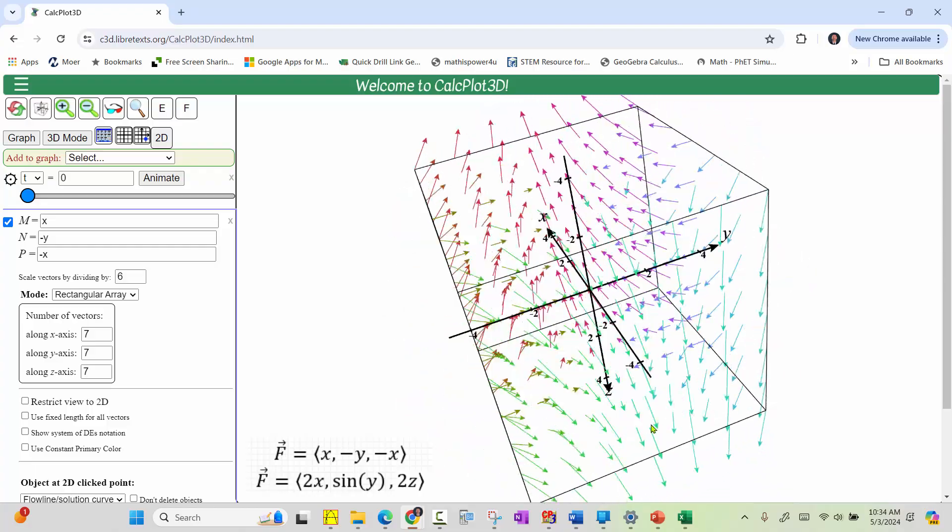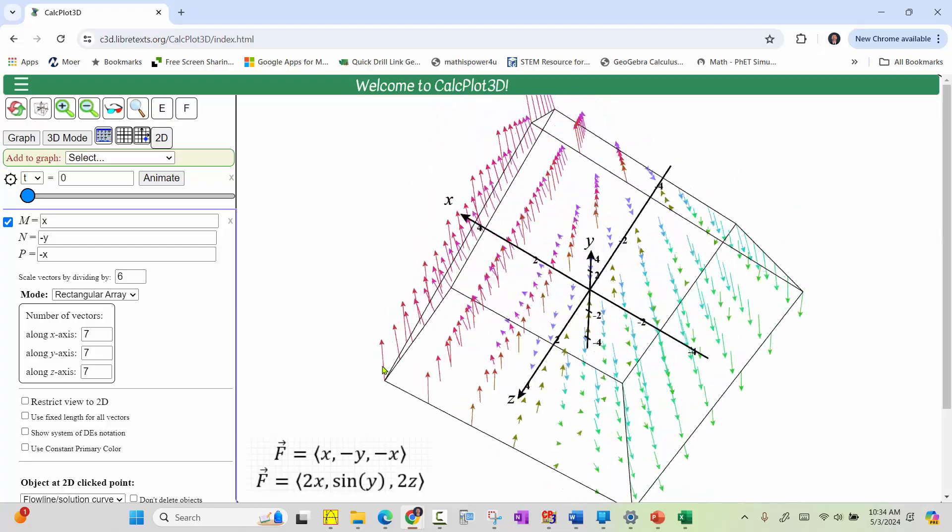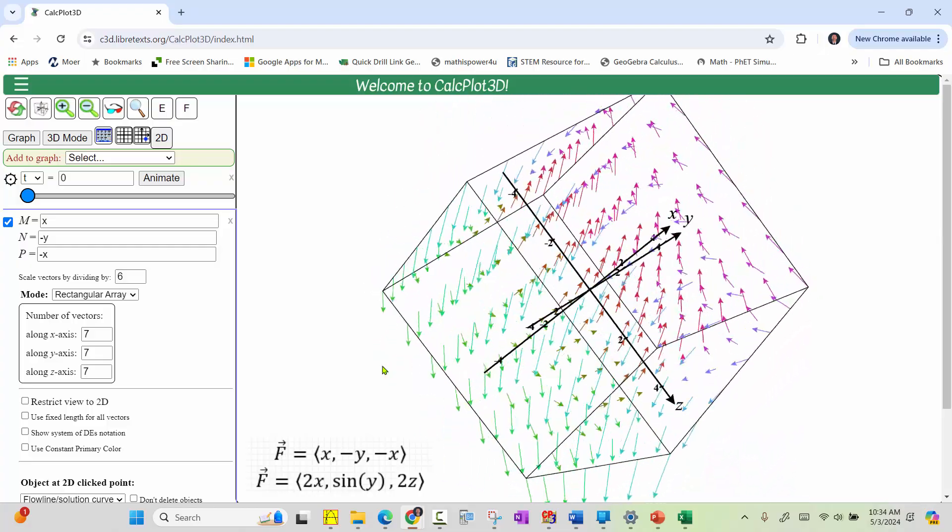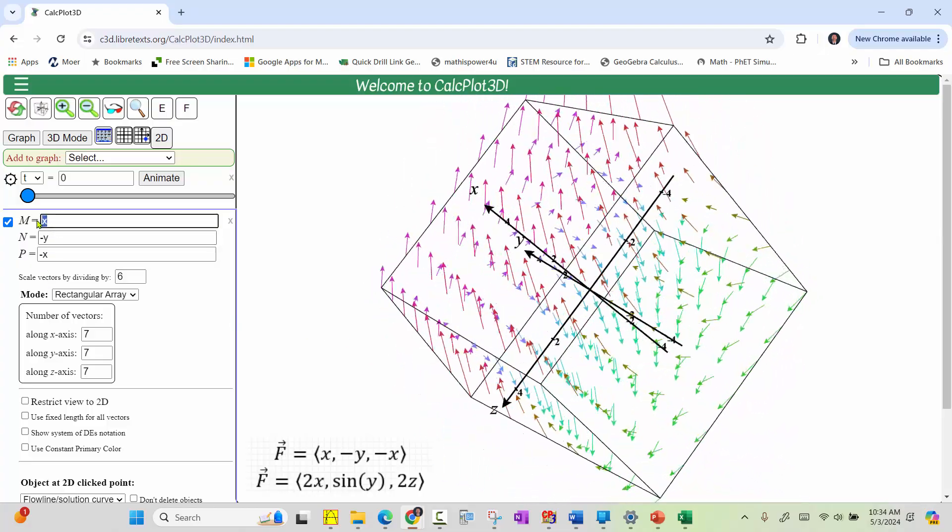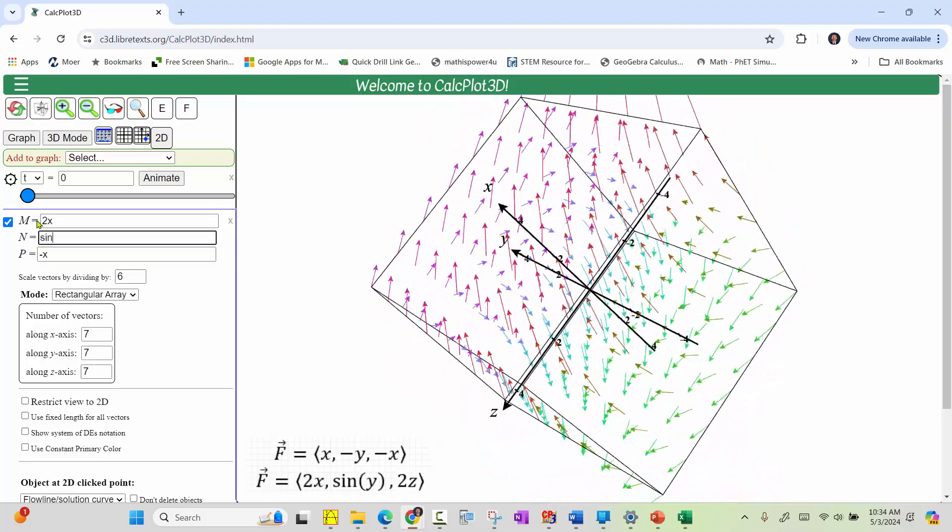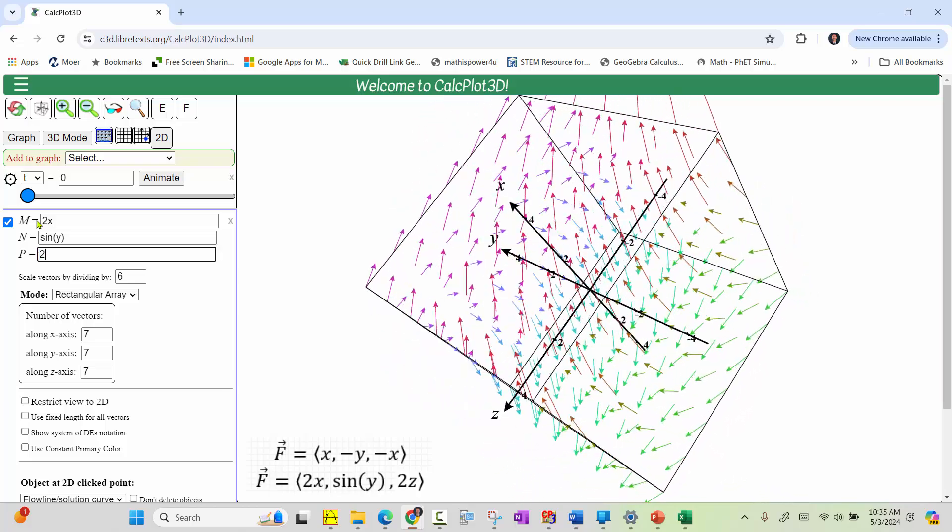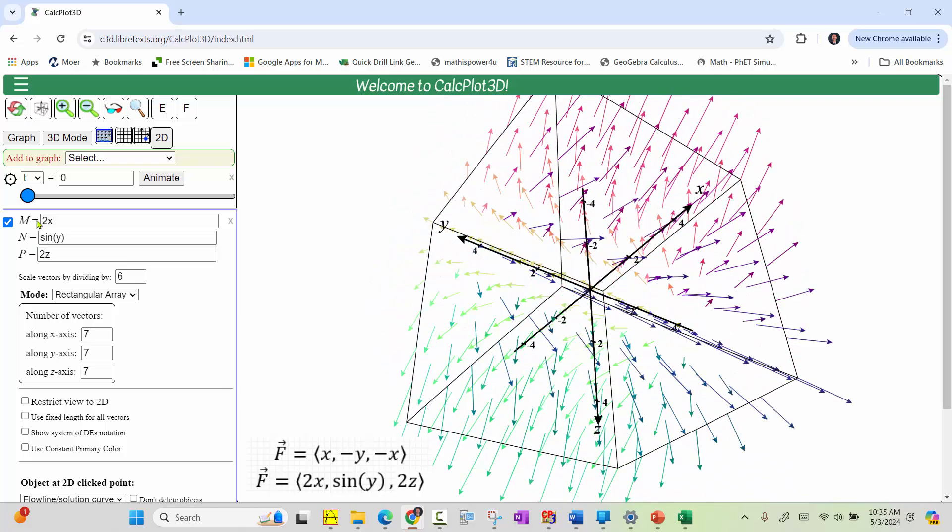Now let's take a look at our second vector field. The x component is 2x, the y component is sine y, and the z component is 2z. This indicates we enter m equals 2x, tab, n equals sine y, tab, and p equals 2z, enter. And again, the vector field appears at the right.